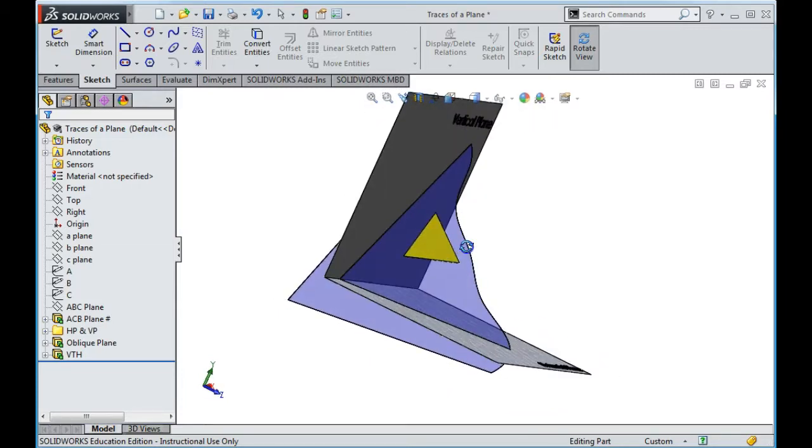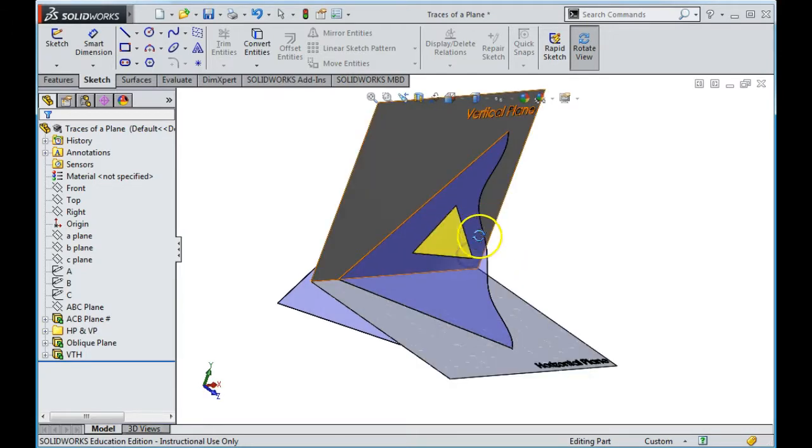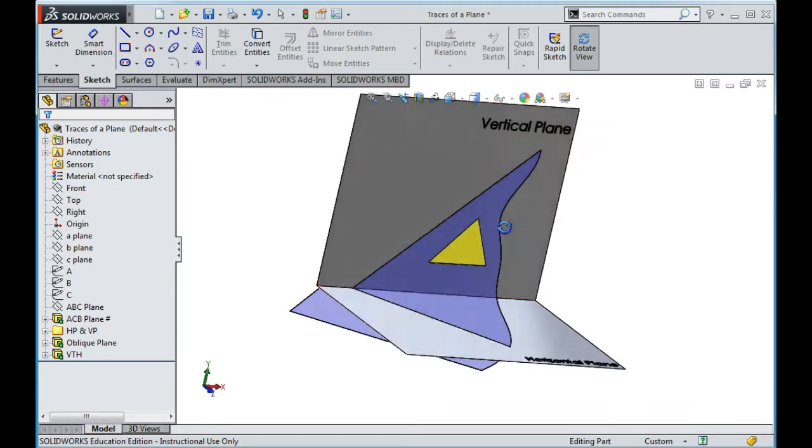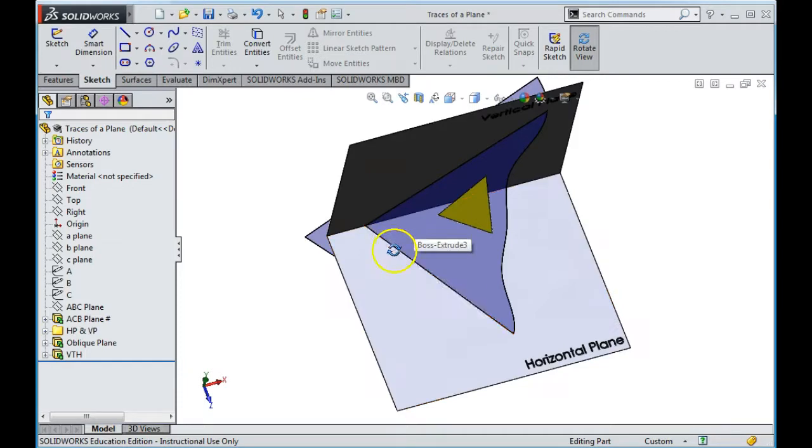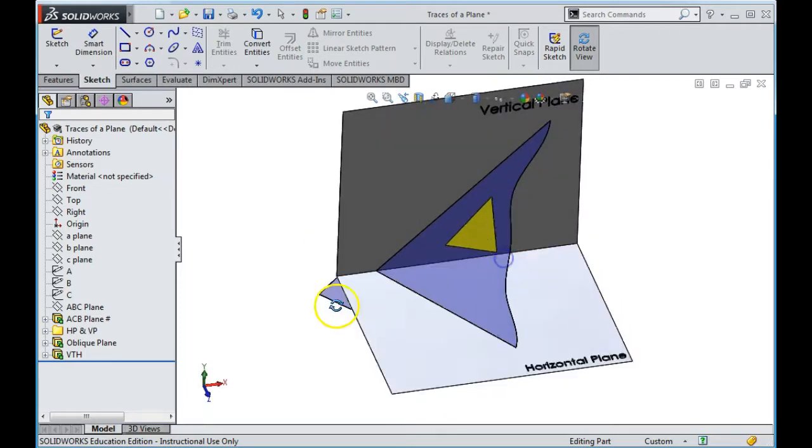Hopefully you can visualize that that oblique plane will go on for infinity. However, I've just drawn it just to maximize my SOLIDWORKS video. My oblique plane, which is the blue plane, cuts my vertical plane, which gives me my vertical trace, and it cuts my horizontal plane, which gives me my horizontal trace. That's what I'm looking for in this question.